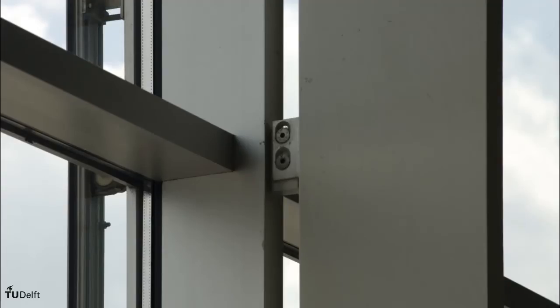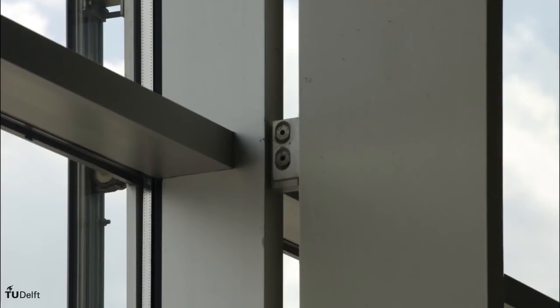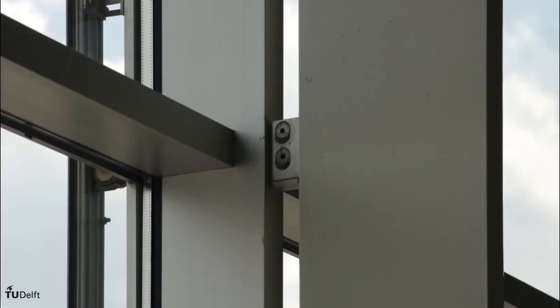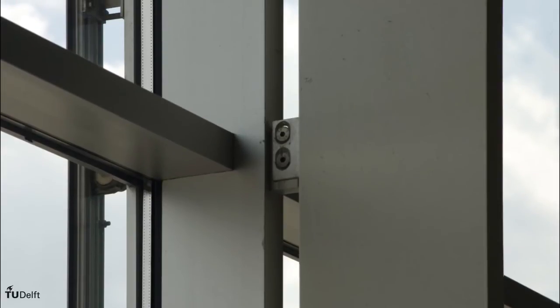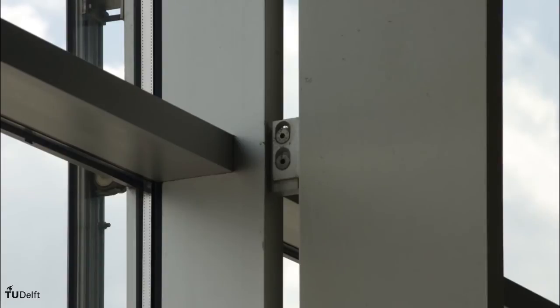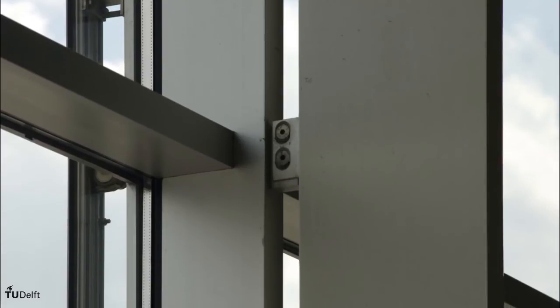The other example is the facade of Schiphol International Airport. The facade, with glass and sunscreen, can move vertically relative to the inner part, which is the load-bearing structure of the roof, by means of slotted holes.